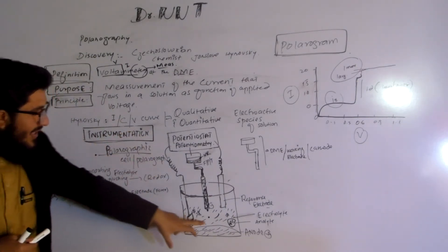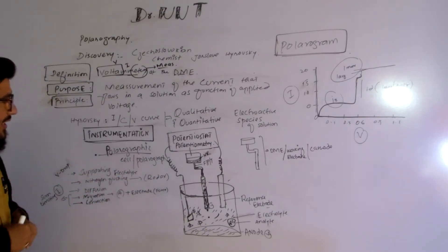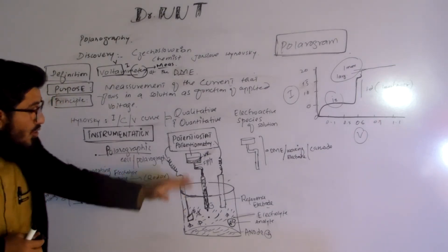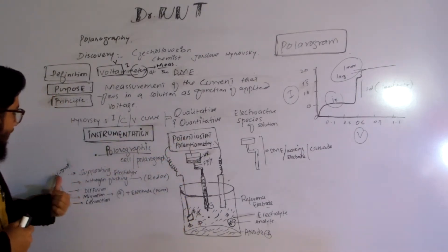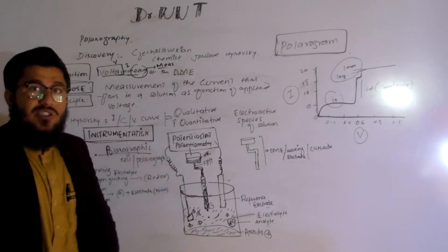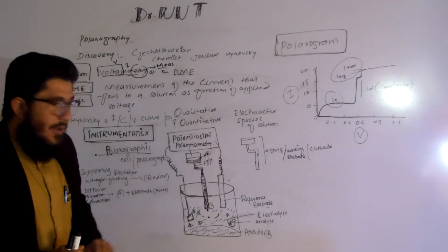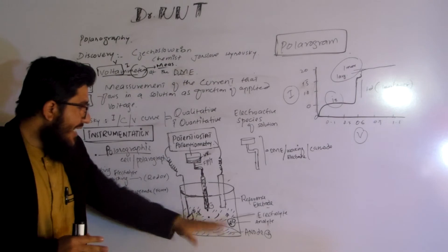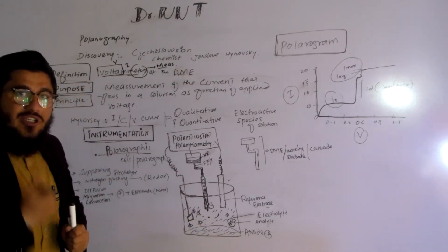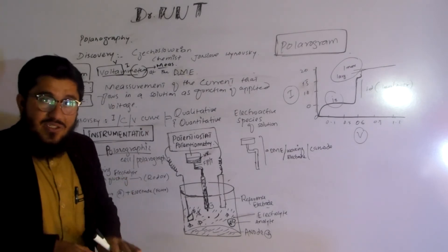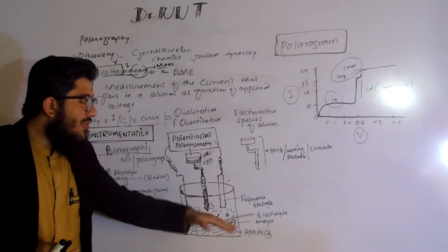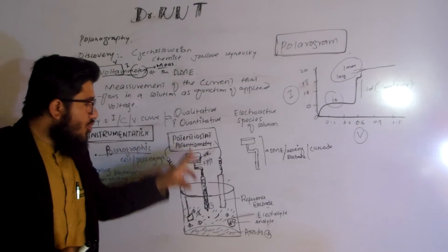In this polarograph, why is the supporting electrolyte given that name? Because it supports the process of polarography. It supports polarography by reducing the potential drop and also reducing the resistance between the analyte and the electrodes. This means a continuous amount of potential is supplied and resistance is decreased, so the analyte can easily move from its position toward the electrodes, especially toward the dropping mercury electrode.